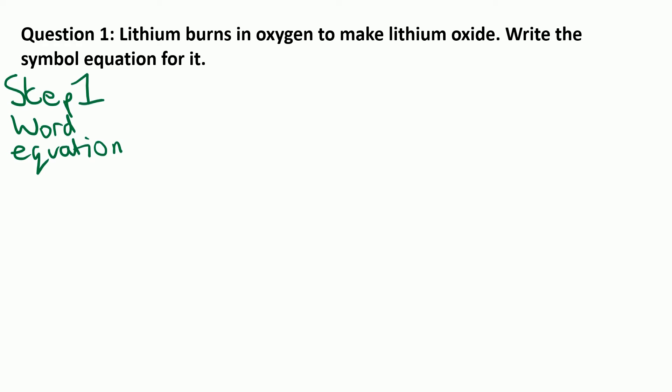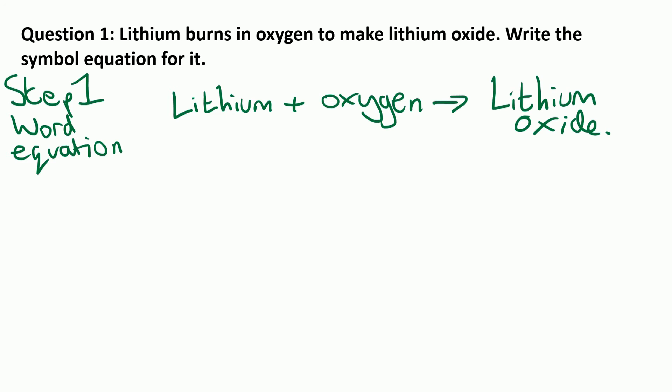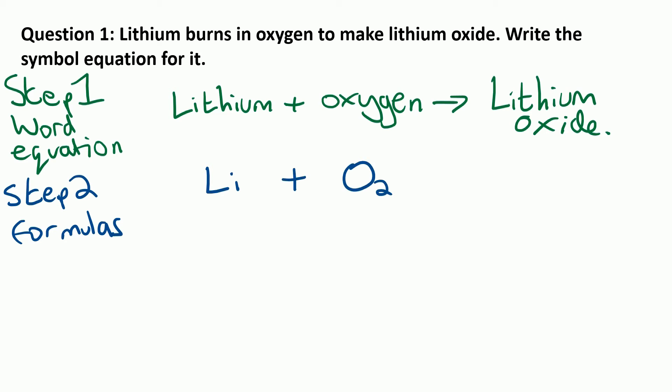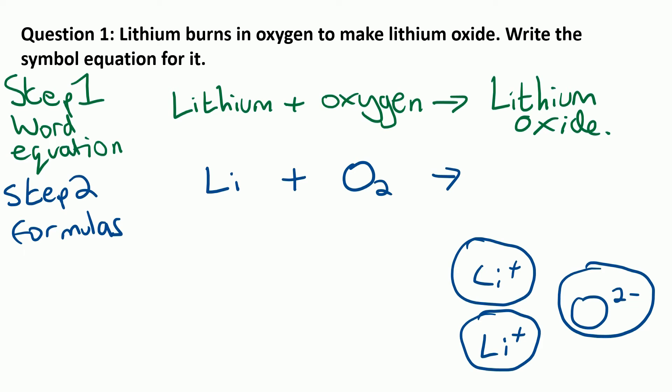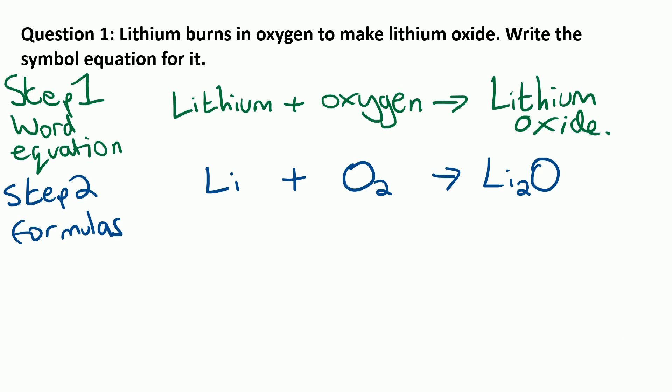Step one — the word equation: lithium and oxygen makes lithium oxide. Step two is to write the formulas. Lithium is Li. Oxygen is O₂. And for lithium oxide, lithium is in group one so it makes a 1+, oxygen is in group six so that makes a 2−. So we're going to need two lithiums to get a 2+ to balance out the 2− of the oxygen. The formula becomes Li₂O, since we've got two lithium ions and one oxide ion. That would get your first mark in the exam.